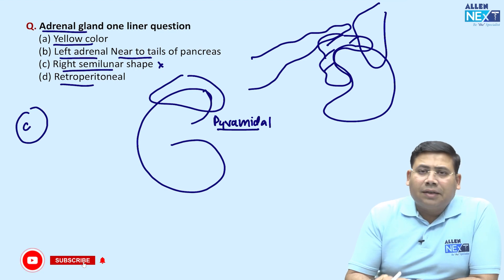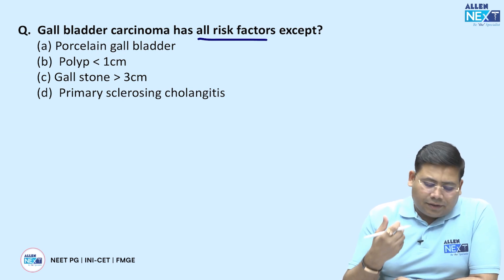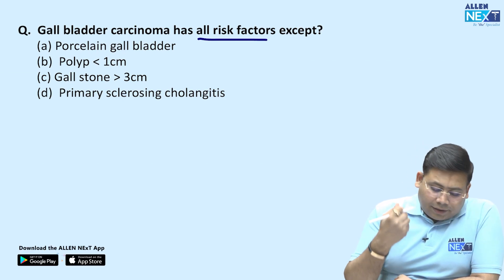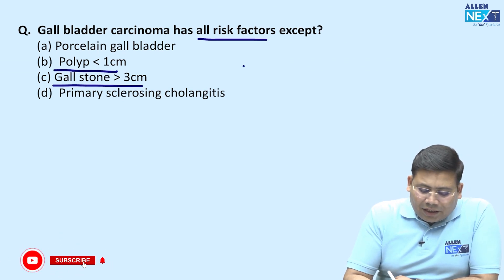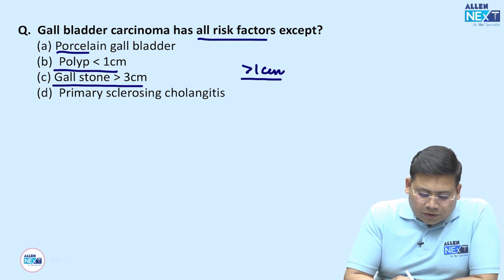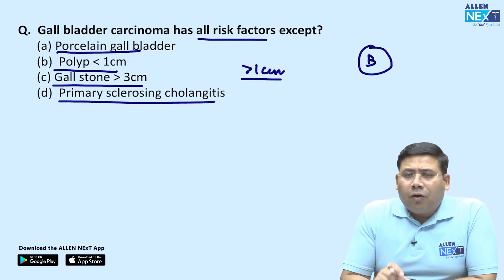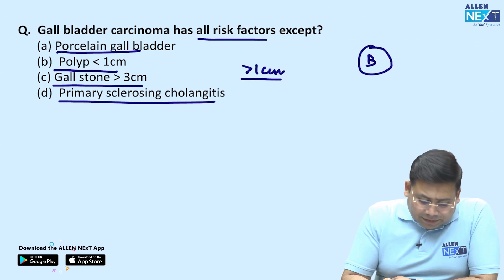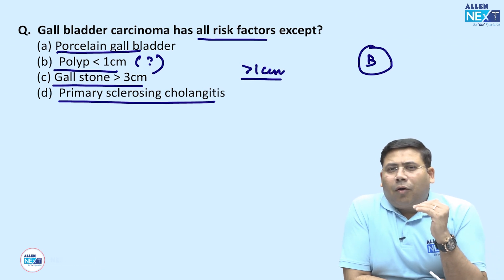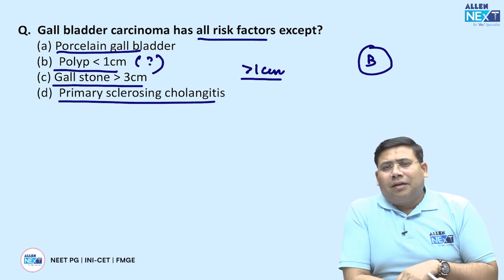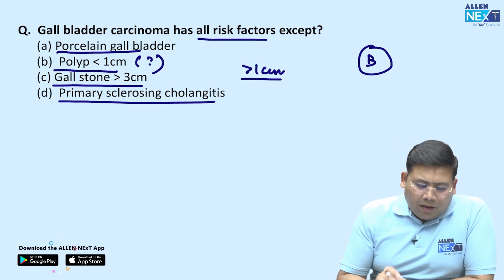Gallbladder cancer — all are high risk factors except which one? Remember Salmonella Typhi carriers, porcelain gallbladder, gallstones especially giant stones more than three centimeters, polyps more than one centimeter, and primary sclerosing cholangitis are all risk factors. Polyps less than one centimeter do not increase the risk of malignancy. However, in the Asian or Indian population, polyps more than seven millimeters may be a high risk factor. I would have marked B as the answer.